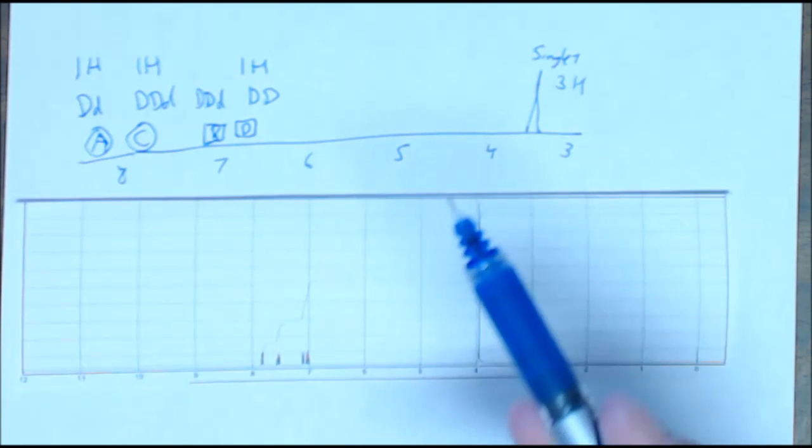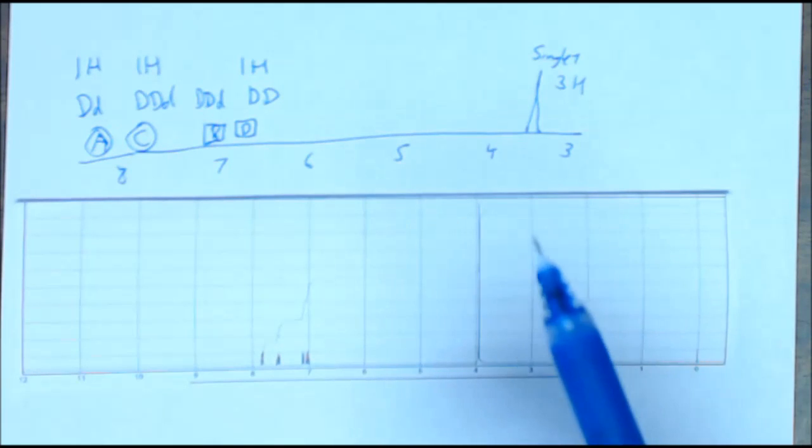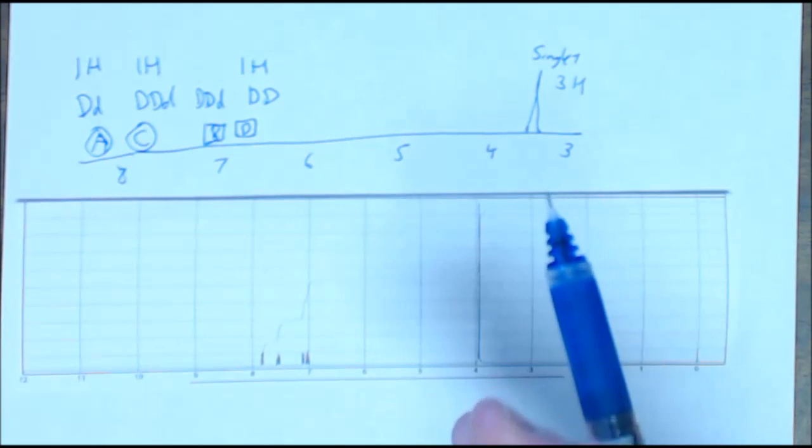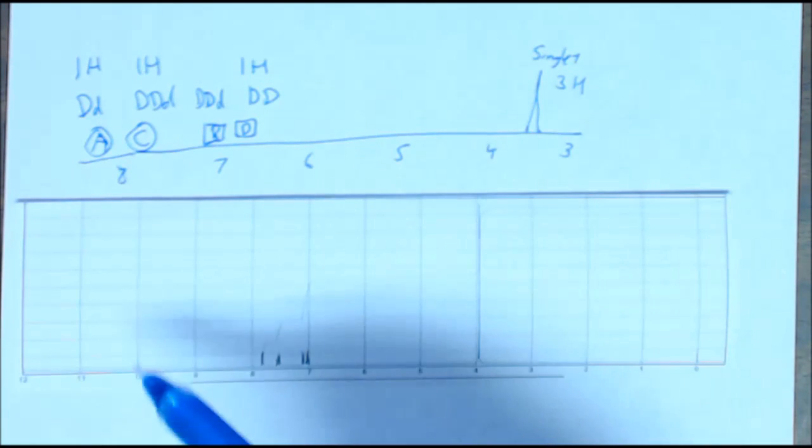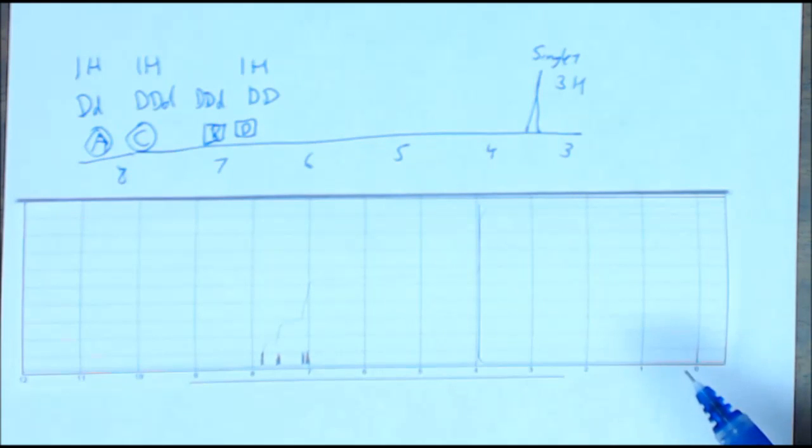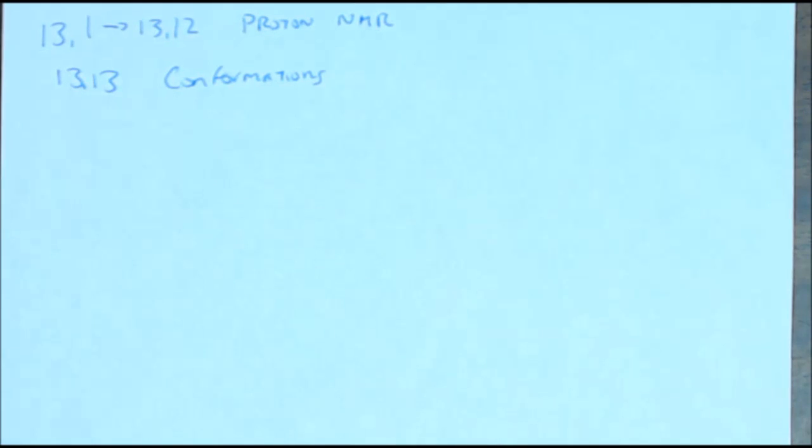But this is pretty much what we predicted using this NMR. And that's what we're doing here. That's what I'm trying to show you. I'm just trying to show you that you can predict kind of what you see if you know what your structure is. And the NMR should follow along with what it is, and there shouldn't be any real surprises.